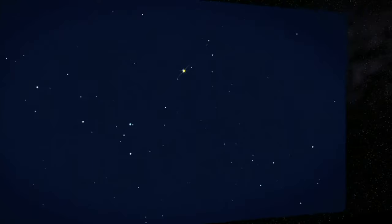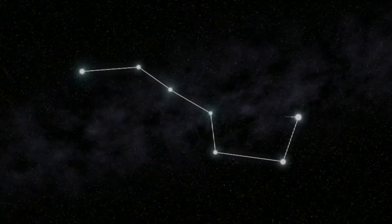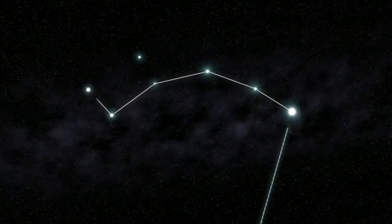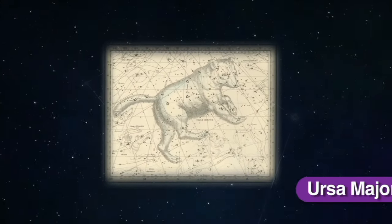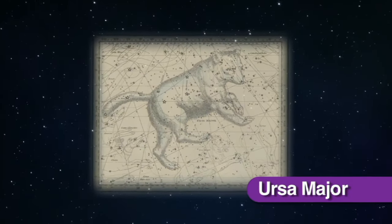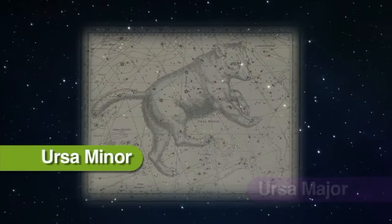Many people think that the Big and Little Dippers are constellations. However, they are actually formed out of two other constellations, called Ursa Major, or Big Bear, and Ursa Minor, or Little Bear.